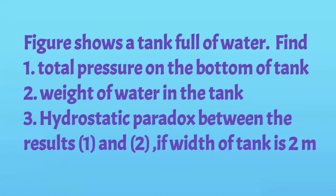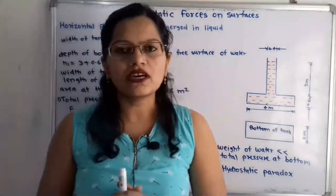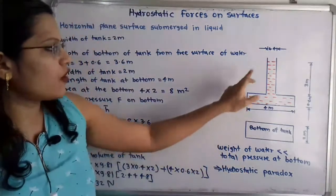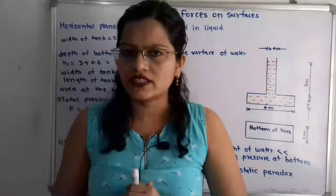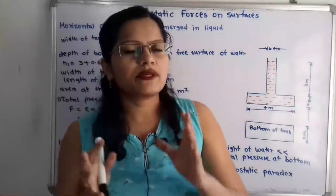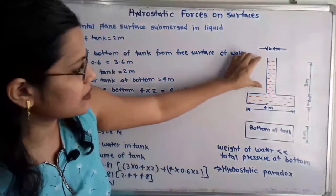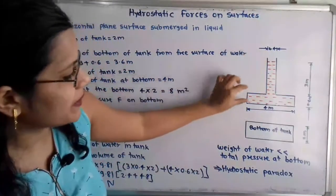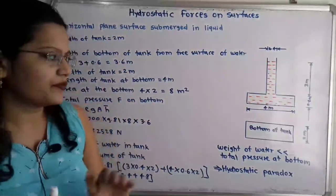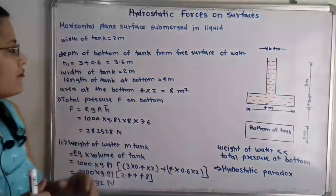Now I will read the given problem. The figure shows a tank full of water. Find: the total pressure on the bottom of the tank, the weight of water in the tank, and the hydrostatic paradox between the results of the first and second. The width of the tank is 2 meters. The shape of the tank is a combination of two rectangular shapes.